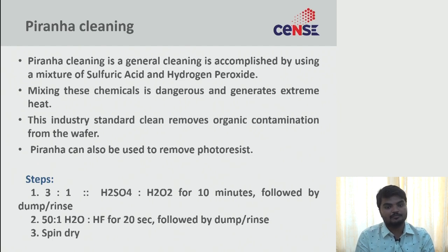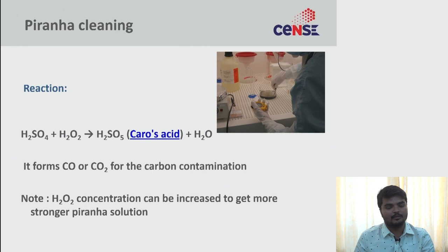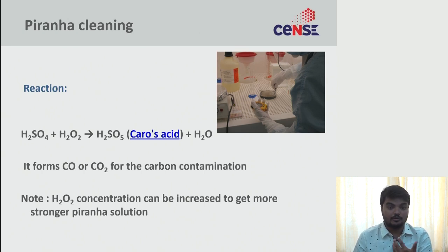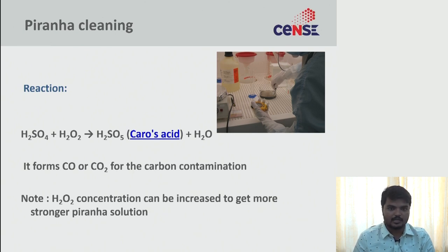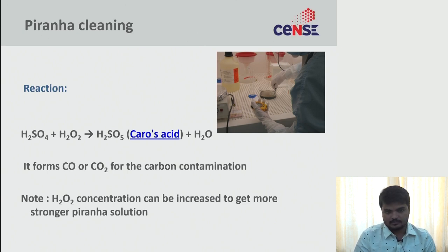The dilute HF removes the thin oxide layer formed during the piranha process. The reaction: H2SO4 and H2O2 mix to form H2SO5, the corrosive persulfuric acid — the acidic oxidizing agent. H2SO5 targets organic contamination, forming carbon monoxide or carbon dioxide from carbon-based organic contamination, which liberate as gases.